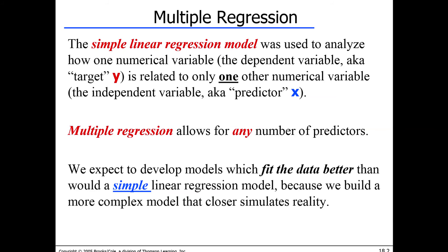The idea behind multiple regression is this: in the previous lecture on simple linear regression, we looked at a very simplified problem where we tried to predict the price of a car based on the mileage of the car. We got a pretty decent model — our R-squared was fairly decent — but there was still a pretty substantial room for improvement. That means mileage, while being an important variable, is not everything. There are other predictor variables that can play a role in predicting how much a car will be priced on the market.